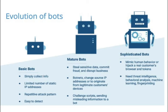As years have progressed, bots have gotten more mature. They can now change their source IP address or originate from a legitimate customer device. Today's bots can mimic human behavior. When we humans browse a website, we use non-linear mouse movements and pause, and sophisticated bots can mimic these behaviors. The key challenge with detecting bots is being able to classify humans from bad bots, and since bad bots have become so sophisticated, they look like real users on the internet.